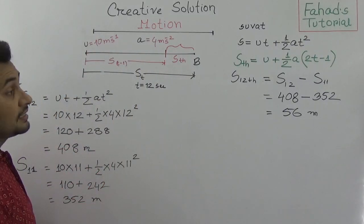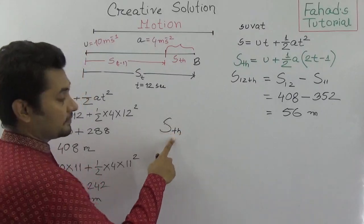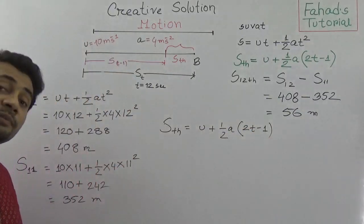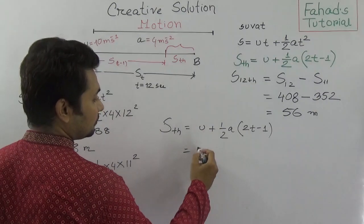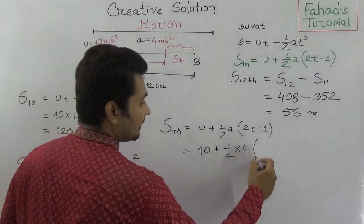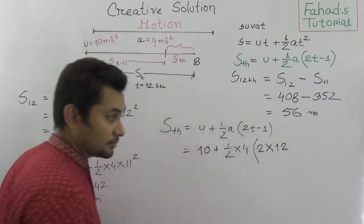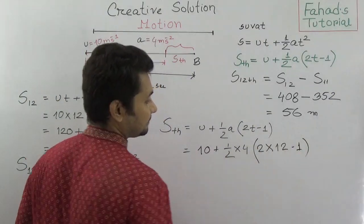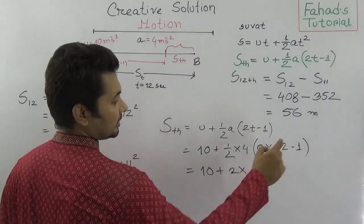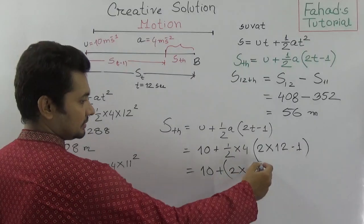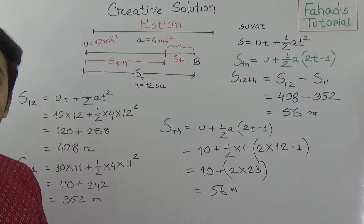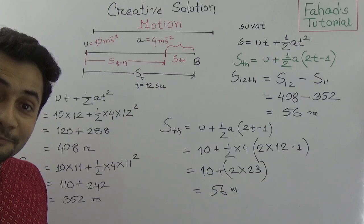Now let's verify using the Nth second formula directly. S_nth = U + ½A(2T − 1), with U = 10, A = 4, T = 12. That gives 10 + ½×4×(2×12 − 1) = 10 + 2×(24 − 1) = 10 + 2×23 = 10 + 46 = 56 metres. We get the same answer very simply.